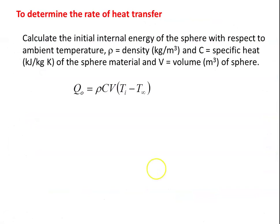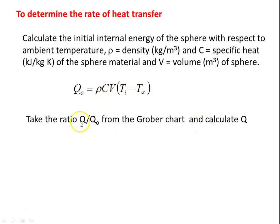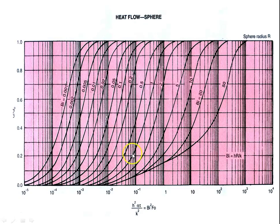To determine the heat transfer, first calculate the initial energy of the sphere with respect to ambient temperature: Q_o = ρ·c·V·(T_i − T_∞), where ρ is the density (kg/m³), c is the specific heat (kJ/kg·K), and V is the volume of the sphere. Using the Grober chart, find Q/Q_o, which is a function of Bi²·Fo and the Biot number. The x-axis is Bi²·Fo and the y-axis is Q/Q_o, with lines for constant Biot number h·r/k. Knowing the Biot number and the x-axis value, we find Q/Q_o and then calculate Q.